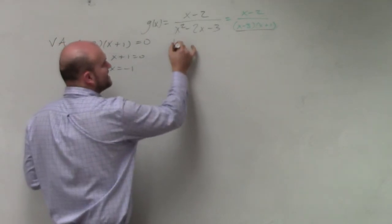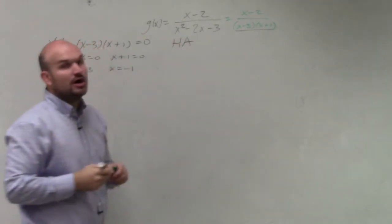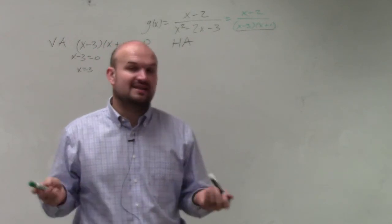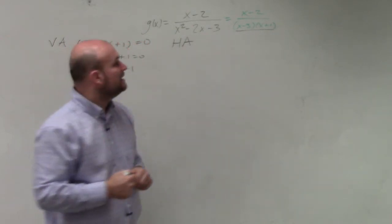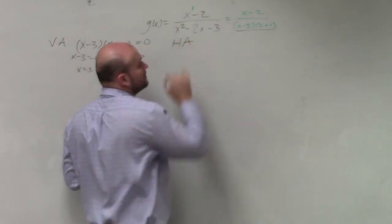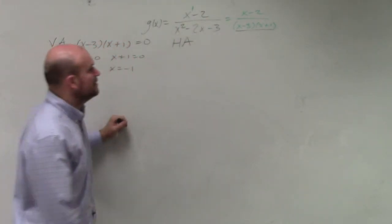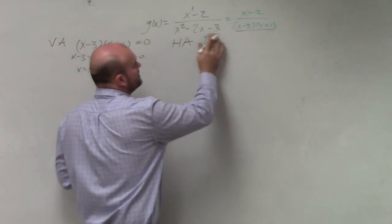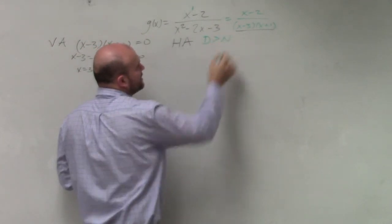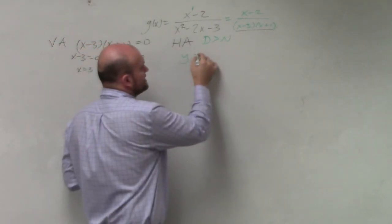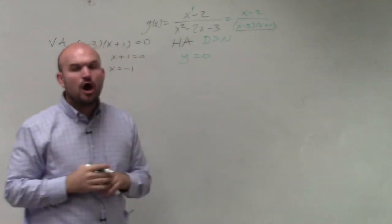All right. The next one is the horizontal asymptotes. So in the first chapter, we talked about horizontal asymptotes. To find the horizontal asymptotes, what you need to do is compare the degree of each polynomial. The degree in the numerator compared to the degree in the denominator. When the degree in the denominator is greater than the degree in the numerator, you will need to know that your horizontal asymptote is y equals zero. Always.